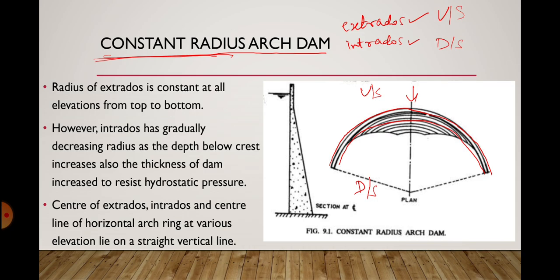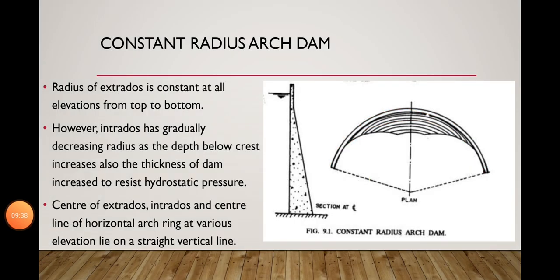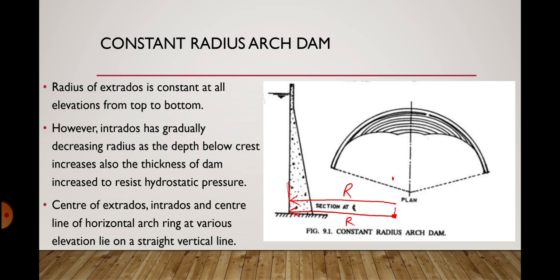In a constant radius arch dam, the radius of the extrados is constant at all elevations from top to bottom of the dam. The center of curvature is fixed, and measuring the radius at any level gives the same value r. This means the upstream face of the dam is vertical.